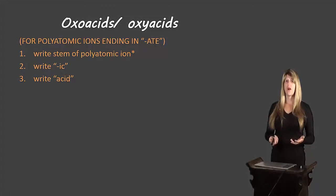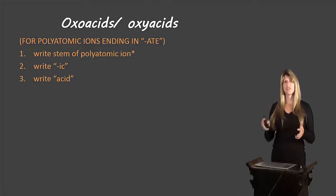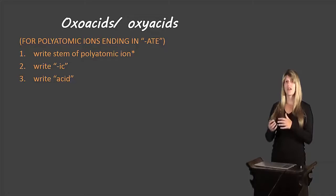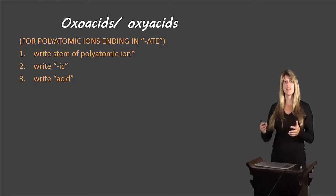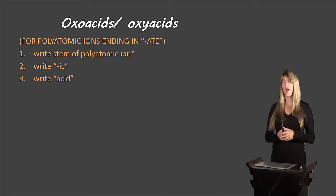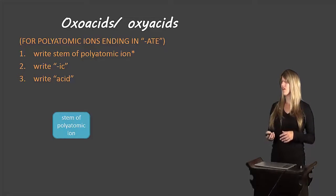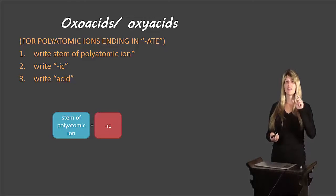Now let's look at oxoacids. There are many different types, but for this course we're going to focus only on oxoacids with polyatomic ions that end in '-ate.' If you take chemistry in grade 11 or 12 you'll learn about the other types. To name these, write the stem of the polyatomic ion, add the suffix '-ic,' then write the word 'acid.'